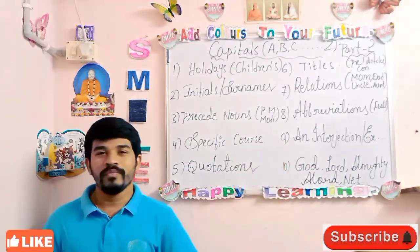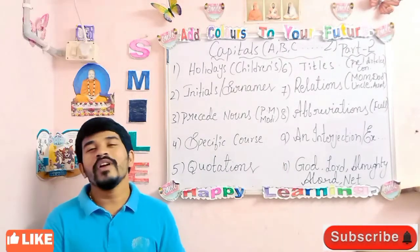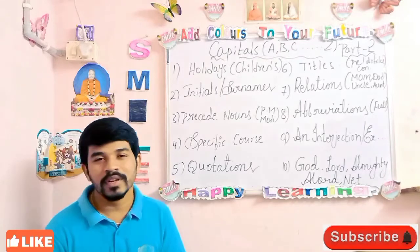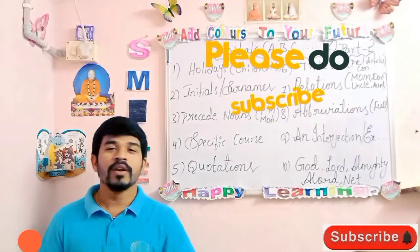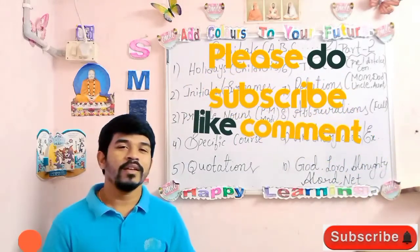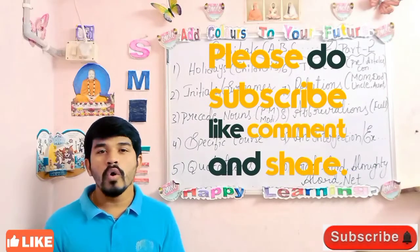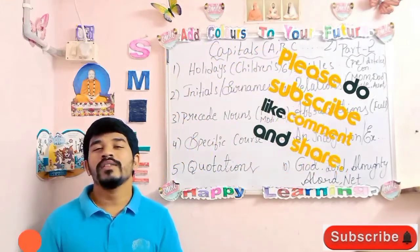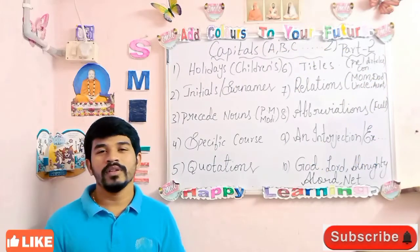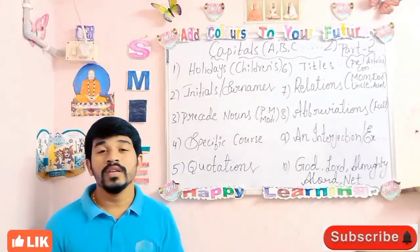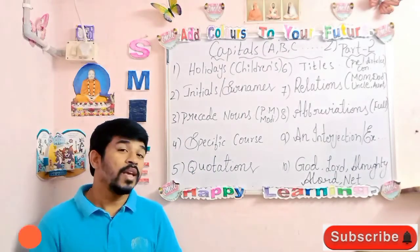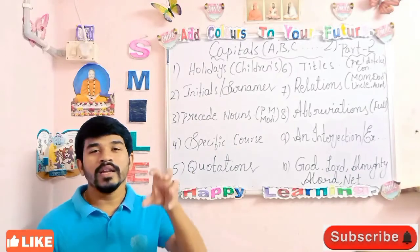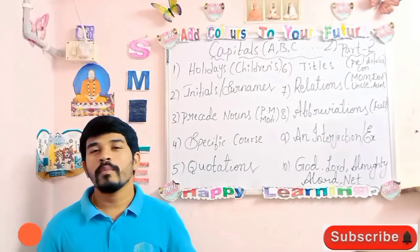Coming to the ninth rule: whenever you are writing any interjection or exclamation word, you must mention the first letter as a capital letter. Words which express sudden feelings are called interjections — for example, 'Oh!' or 'Shit!' Whenever you are writing such interjection words, the first letter must be in capital.